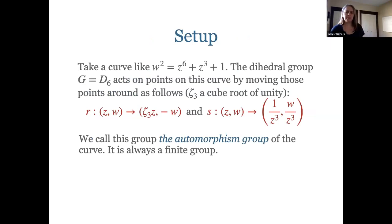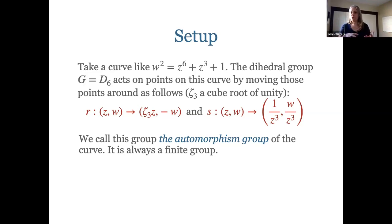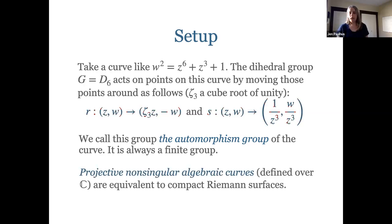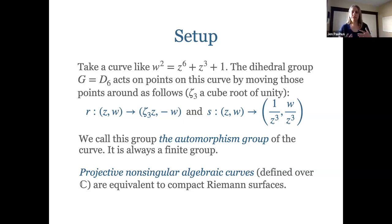Since this is a number theory seminar, I'm going to start with a curve instead of a Riemann surface. Here's an example of a curve where the dihedral group of order 12 — D6 — acts on points of the curve as an automorphism, moving the points around. I give you the two generators for this particular automorphism. This is called the automorphism group of a curve, and it turns out that this is always finite. Projective non-singular algebraic curves are also precisely compact Riemann surfaces.